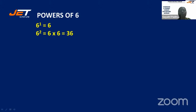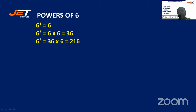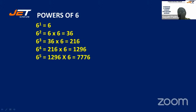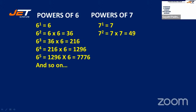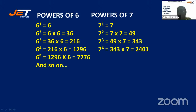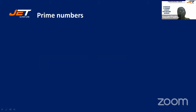Powers of 6: 6 power 1 is 6, 6 square is 36, 6 cube is 216, 6 power 4 is 1296. Powers of 7: 7 power 1 is 7, 7 power 2 is 49, 7 power 3 is 343, 7 power 4 is 2401.